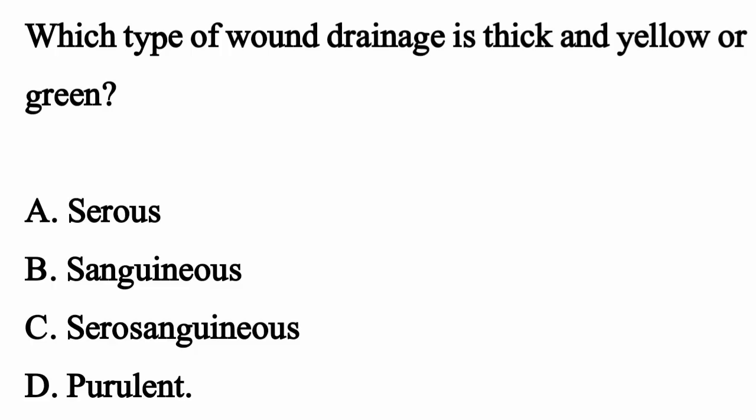Which type of wound drainage is thick and yellow or green? The correct option is option D: Purulent.